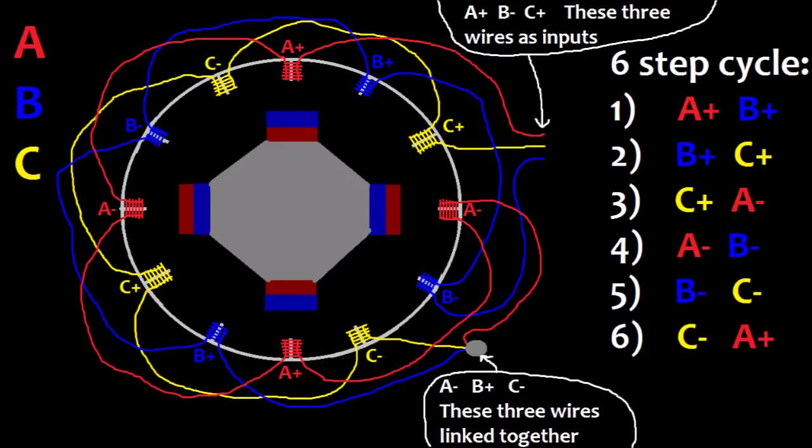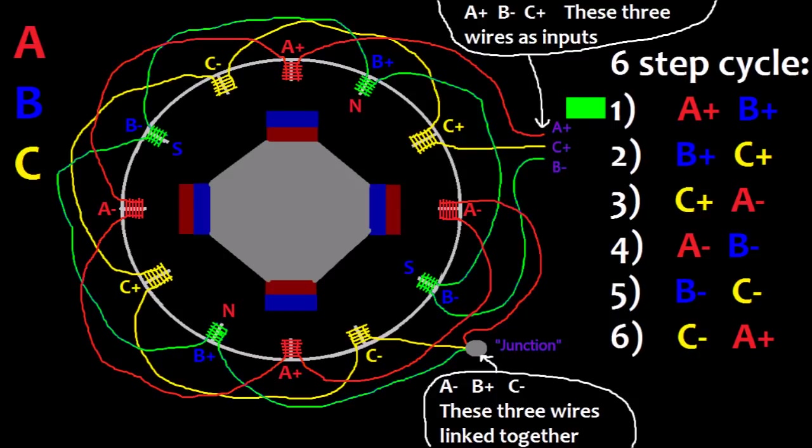And at the other end there are three wires, one from each coil series as the input wires for the motor. In the first step it's A plus B plus, meaning that current is flowing in the forward direction through the A and B coils. It starts by a positive signal flowing in through the A plus wire to the junction, and you can see that this makes a north magnetic pole facing inward at each of the A plus coils and a south magnetic pole facing inward at each of the A minus coils.